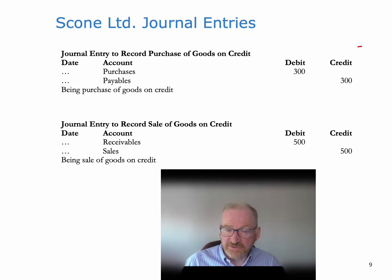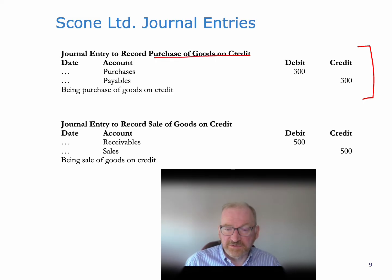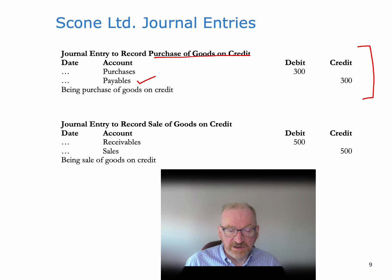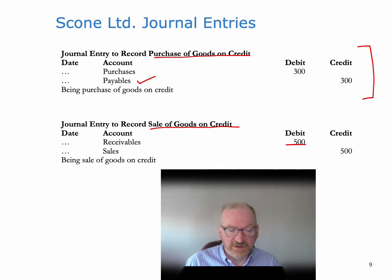Here are the journal entries for the transactions. Purchase of goods on credit: debit purchases 300, credit payables 300. Sale of goods on credit: debit receivables 500, credit sales 500.